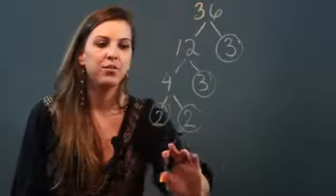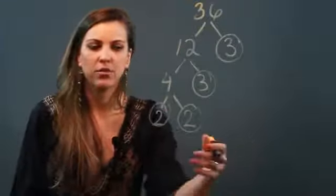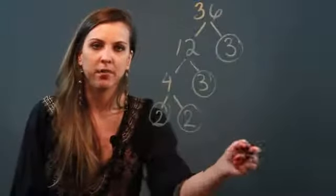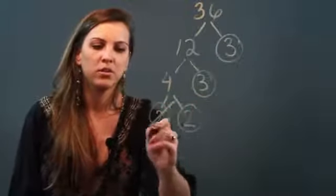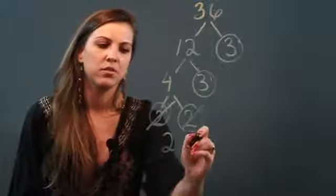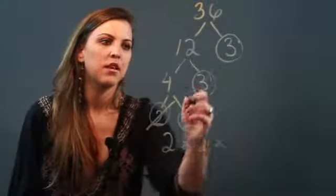So now what you do is you rewrite all the factors in order from least to greatest, and I'm going to cross it out every time I write it so I don't miss one. So 2 times 2 times 3 times 3.